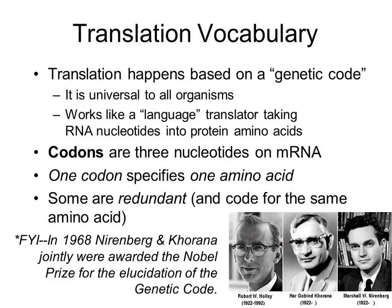There are a few things to know about translation. First of all, it's universal — all life uses the same code to make proteins with amino acids. Every codon on an mRNA starts at what's called the reading frame. mRNA has a start codon that is AUG. After that, every three nucleotides in the established reading frame is a codon, and every codon will specify an amino acid. But there is a wobble effect — some amino acids can be coded by multiple codons, so codons can be redundant.